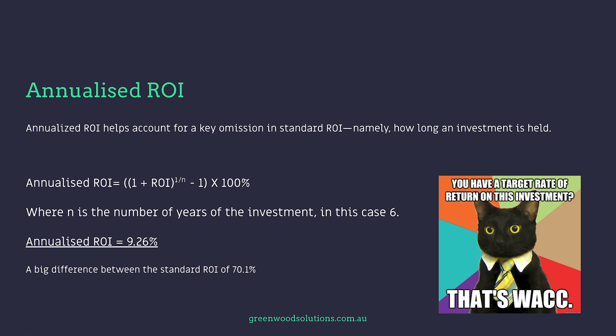Annualised return on investment helps account for a key omission in standard ROI — namely, how long an investment is held. The formula is: annualised ROI equals (1 + ROI) to the power of (1/n), minus one, times 100%, where n is the number of years of the investment — in this case, six. When we do the calculation, the annualised ROI is 9.26%. That's a big difference from the standard ROI of 70.1%, because standard ROI does not take into account the time period.